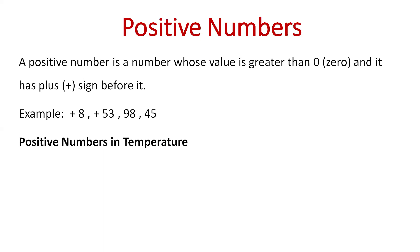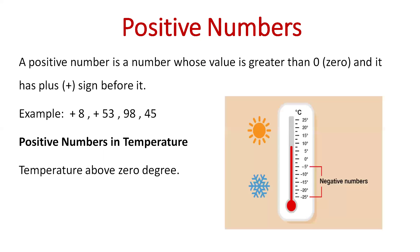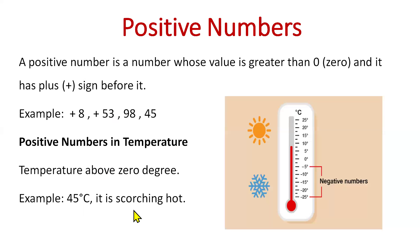Positive numbers are incredibly useful when measuring temperature. In the Celsius scale, zero degrees is set as the freezing point of water. Temperatures above zero are expressed as positive numbers, indicating warmth ranging from mild to hot conditions. Temperatures below zero are expressed as negative numbers, representing cold to extremely cold conditions like those experienced during winters or in polar regions. If the temperature is negative, we say it's freezing cold; if it's 45 degrees Celsius, it's scorching hot.